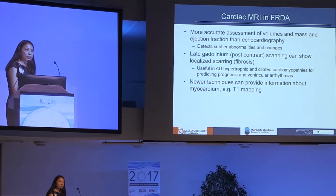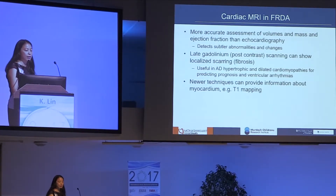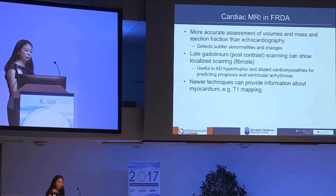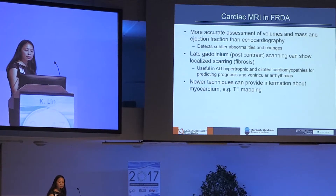Cardiac MRI, compared to echocardiography, can give a more accurate assessment of volumes, mass, and ejection fraction, and is a technique which can detect subtler abnormalities and changes over time. Late gadolinium enhancement involves contrast administration and can show localized evidence of scarring or fibrosis — shown to be a useful parameter in hypertrophic and dilated cardiomyopathies for predicting prognosis and ventricular arrhythmia burden. There are also newer cardiac MRI techniques, specifically a technique called T1 mapping.